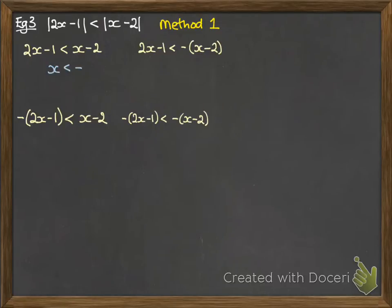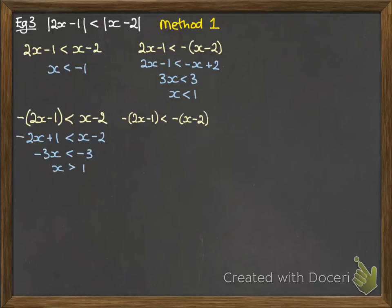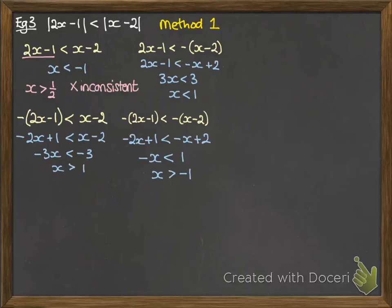Okay, so then we'll consider what happens solving each one to see what region it would give us. Just working through that algebra, this is what we get. Now you can see that some of those contradict each other, so we need to work out which ones are actually the true ones. For that, we consider the range of values that would give each of those required conditions. So on the first one, to have 2x minus 1 be positive, we need x to be greater than a half. Now you can see that that actually contradicts the solution to that set. If x was greater than a half, then it can't also be less than minus 1. They contradict each other, so that's inconsistent.